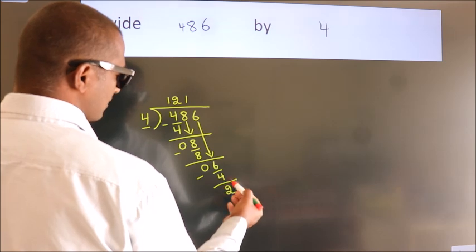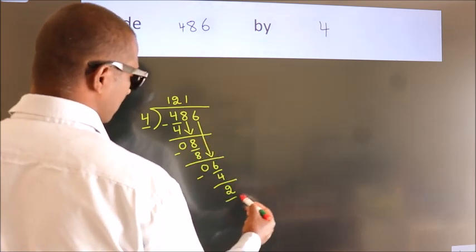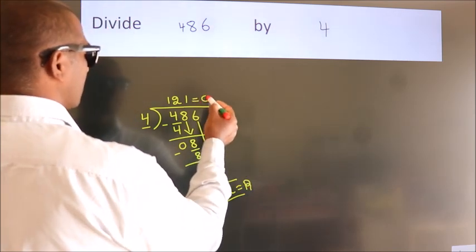After this, no more numbers to bring down. So we stop here. This is our remainder. This is our quotient.